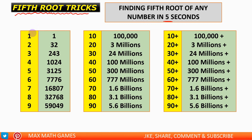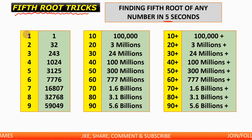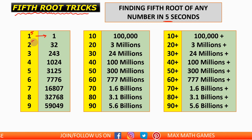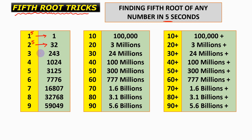The first thing we need to observe is: 1 to the power 5 gives us 1; 2 to the power 5 gives us 32; 3 to the power 5 gives us 243; 4 to the power 5 gives us 1024; 5 to the power 5 gives us 3125; 6 to the power 5 gives us 7776; 7 to the power 5 gives us 16807; 8 to the power 5 gives us 32768.